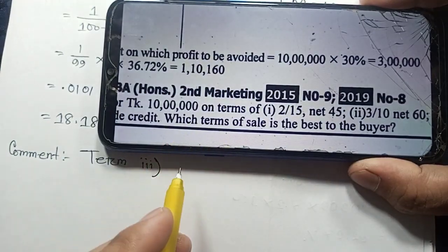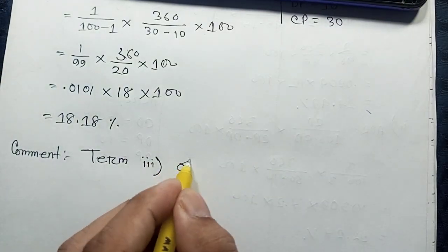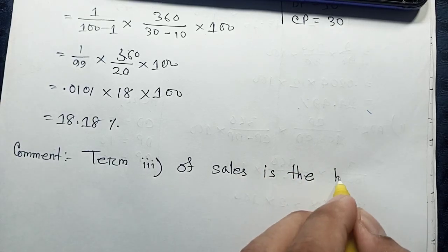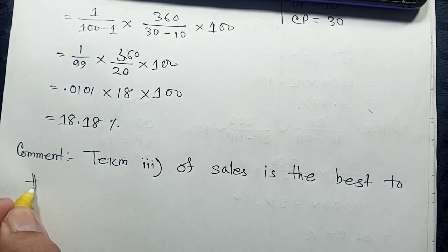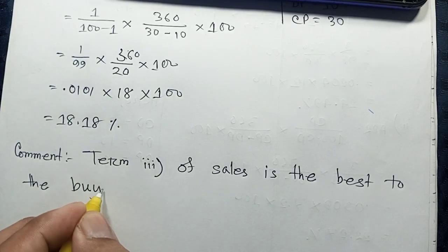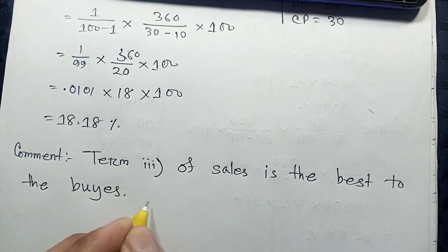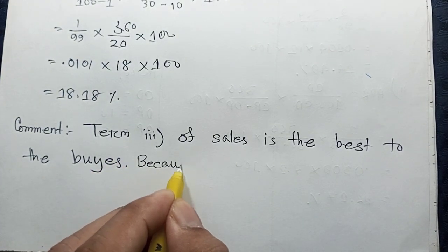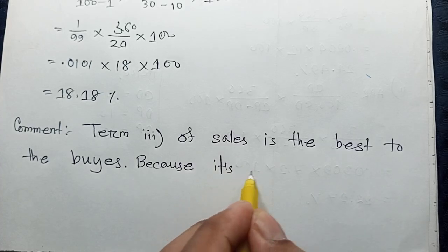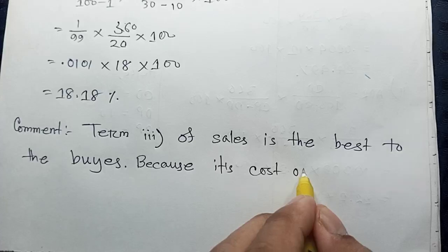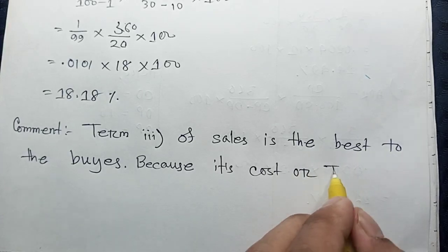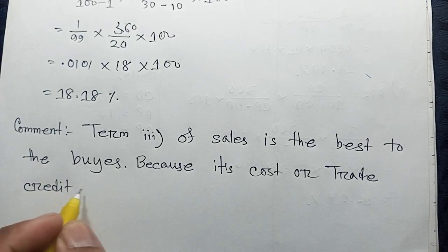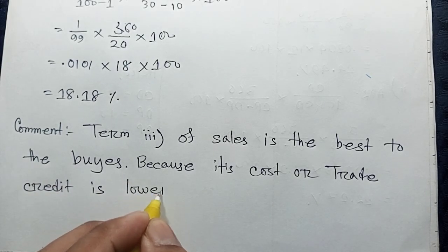Which term of sale is the best to the buyer? The theory of sales — SALES — which term of sale is the best to the buyer? BEST to the buyer. Because its cost of trade credit — TRADE CREDIT — is lower. Lower than the other terms.